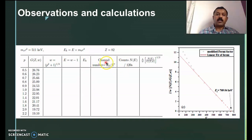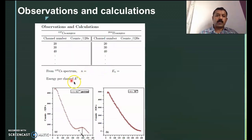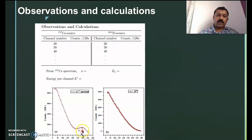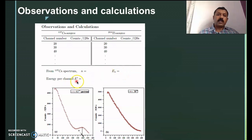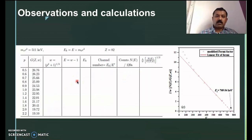Then find out the channel number, which equals E_k / E′. E′ is calculated from the previous cesium calibration graph — it is E_N divided by the corresponding peak channel number N, giving energy per channel E′.